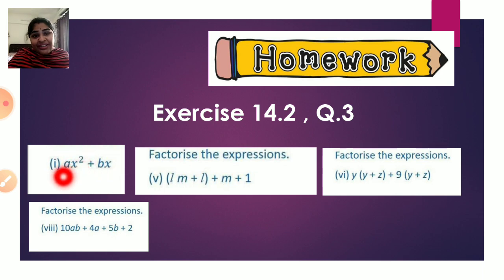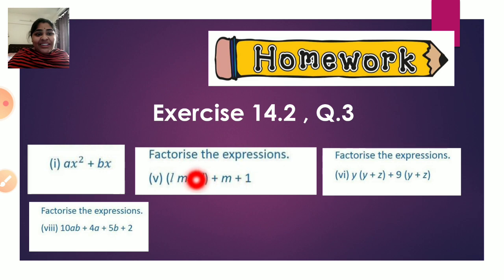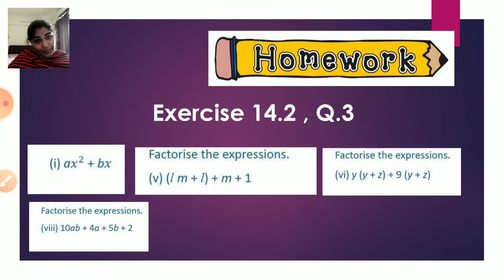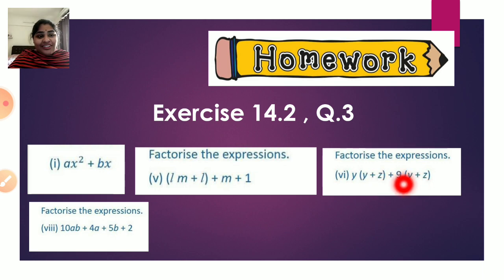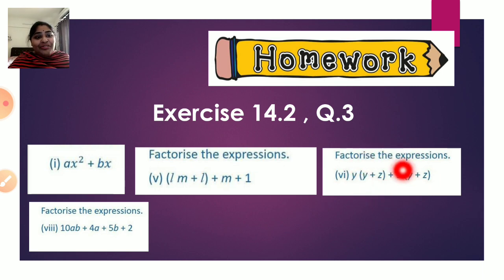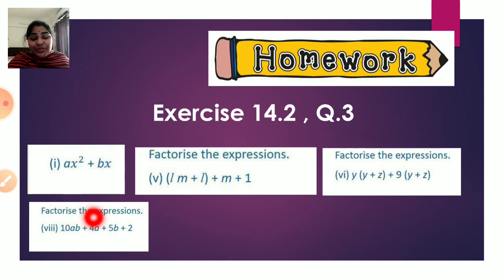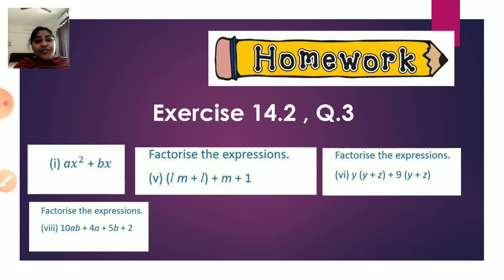For ax² + bx, take x outside giving x(ax + b). For lm + l, take l outside giving l(m + 1). For the sum with y + z, the common bracket is (y + z) and the other bracket is (y + 9). Try the last sum by grouping on your own. We will stop here for today and continue with the same chapter in the next session. Thank you.